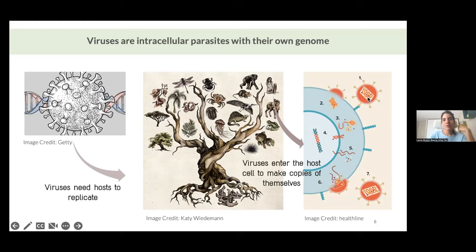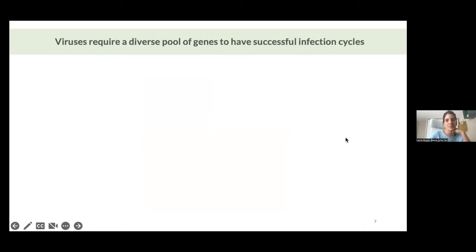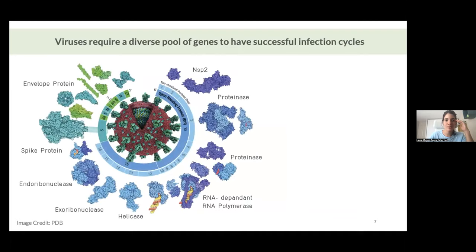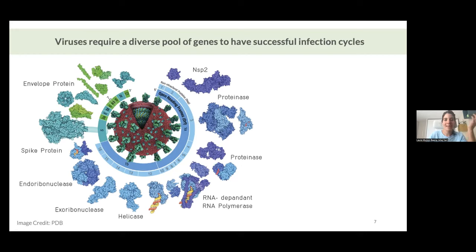The genome of viruses needs to have enough proteins to make all of this infectious cycle possible. A great example is SARS-CoV-2. The SARS-CoV-2 genome is an RNA genome inside a protective coat, and it's only around 32,000 kilobases. This genome is enough for the coronavirus to encode in total 23 different proteins. In comparison, humans have around 80,000 different proteins. So this is a very small number of proteins, but those proteins are enough to cause a pandemic.